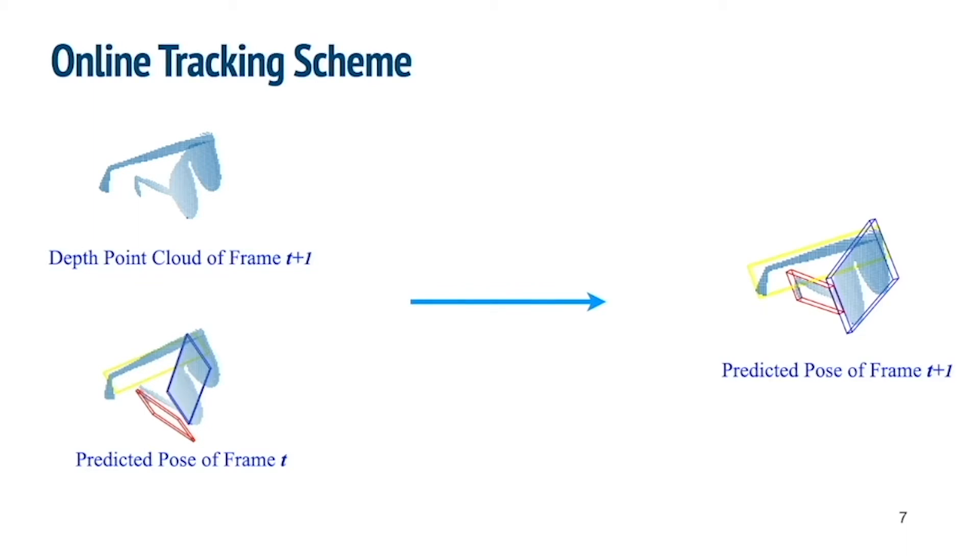Our tracking is done in an online frame-by-frame fashion. At each time step, our framework takes the current point cloud and the pose prediction from the last frame. It then outputs a new pose prediction. This prediction can be fed as the input for the next frame. The problem can then be seen as a single-frame pose estimation problem conditioned on an extra pose input.